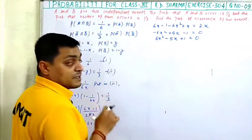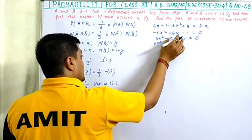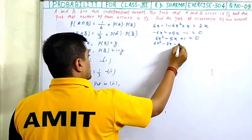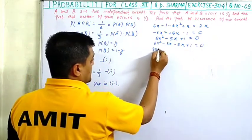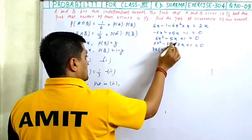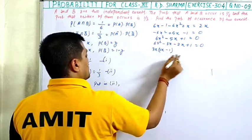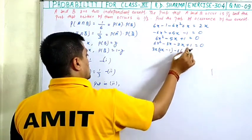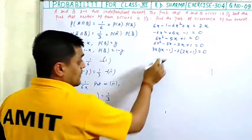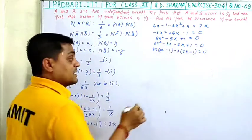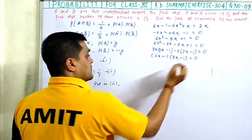Now using middle term splitting on 6x squared minus 5x plus 1 equals 0: we split minus 5x as minus 3x minus 2x, giving 6x squared minus 3x minus 2x plus 1 equals 0. Taking 3x common from the first two terms and minus 1 from the last two: 3x times 2x minus 1, minus 1 times 2x minus 1 equals 0. So 2x minus 1 into 3x minus 1 equals 0.